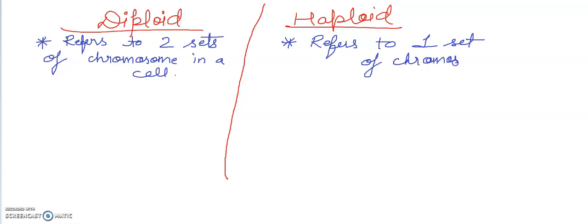Here diploid, you can write the second point is: a diploid cell has 2n number of chromosomes. You can write here: it has 2n number of chromosomes.